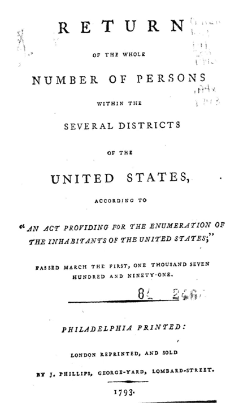Thomas Jefferson, the current Secretary of State, directed Marshals to collect data from all 13 states — Connecticut, Delaware, Georgia, Maryland, Massachusetts, New Hampshire, New Jersey, New York, North Carolina, Pennsylvania, South Carolina, and Virginia — and from the Southwest Territory. The census was not conducted in Vermont until 1791, after that state's admission to the Union as the 14th state on March 4 of that year.